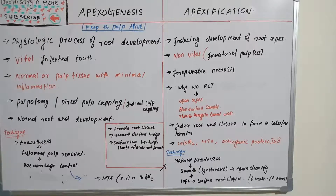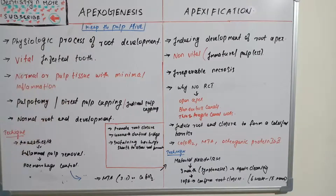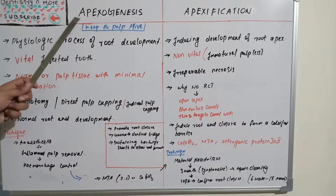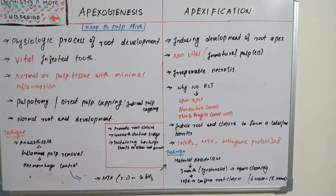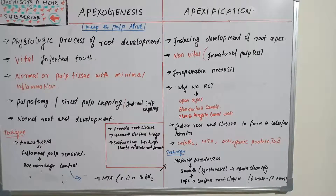Starting with apexogenesis, the basic idea is to keep the pulp alive — we are preserving the pulp and not allowing it to die off. The genesis of the apex means we are promoting root formation or root closure by a natural, physiological process. It is a physiological process of root development.